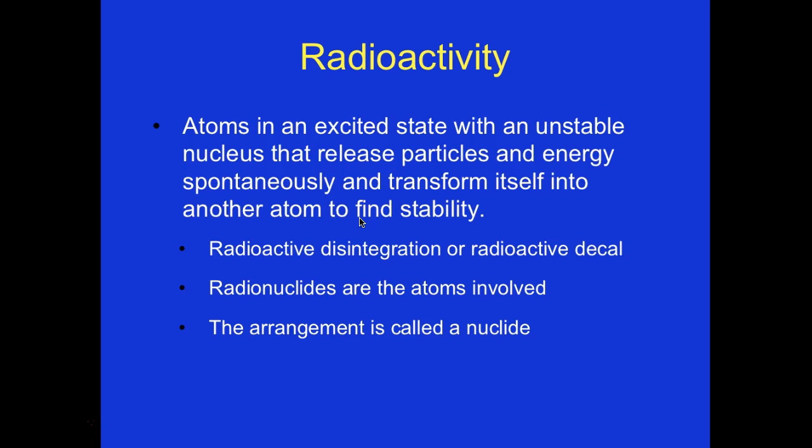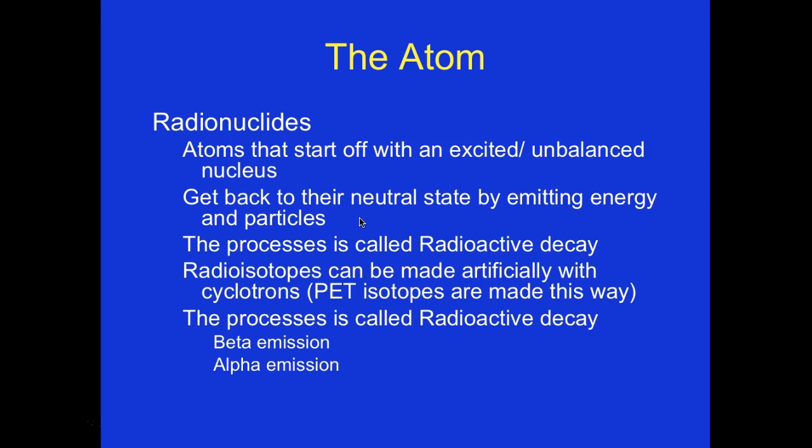Radioactivity: atoms in an excited state with an unstable nucleus release particles and energy spontaneously and transform themselves into another atom to find stability — this is called radioactive disintegration or radioactive decay. Radionuclides are atoms that start off with an excited, unbalanced nucleus and get back to their natural state by emitting energy and particles. The process is called radioactive decay.